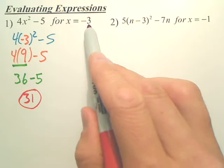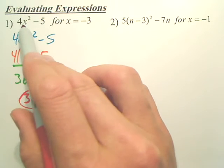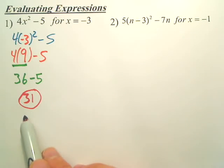So basically, you take this value, put it wherever you see an X, and then combine, and then order of operations.